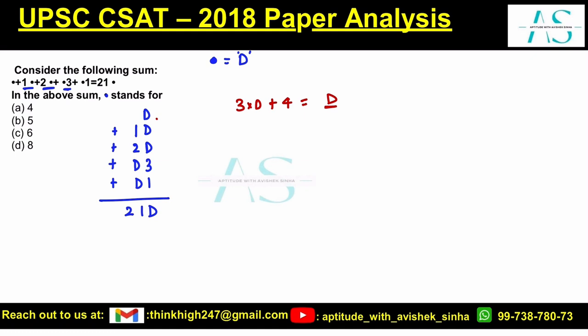Let's take help of the options. Option A: I'm placing here 4, so this is 3 into 4, which is 12 plus 4, we get 16. Do the last digits match? No, the last digits don't match, so option A is ruled out.